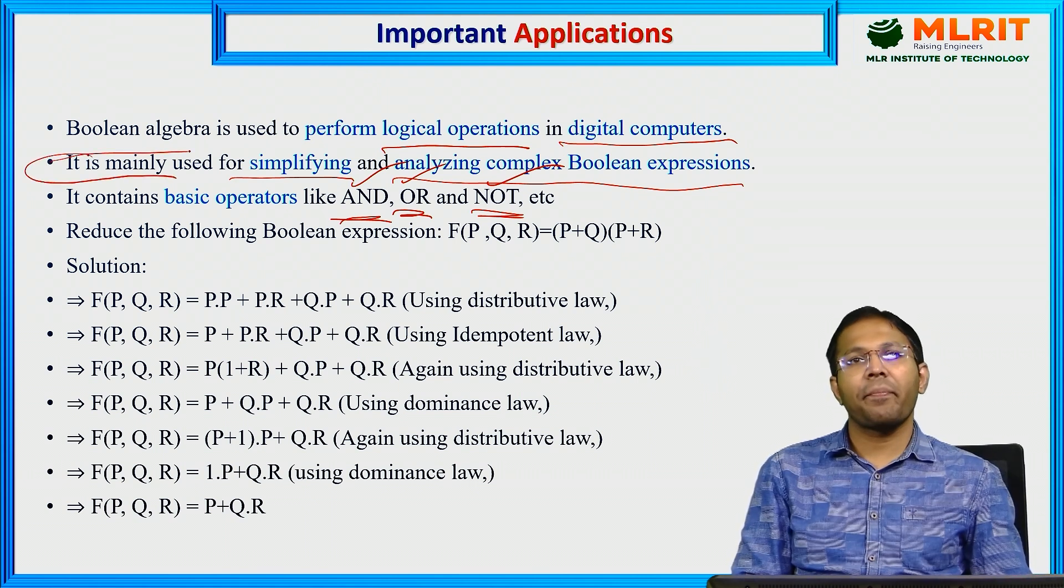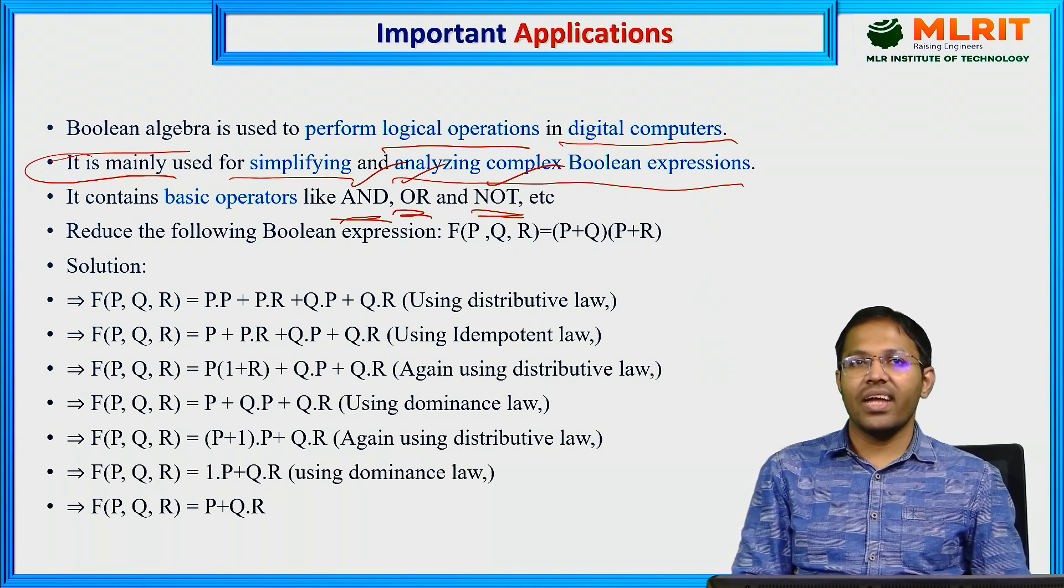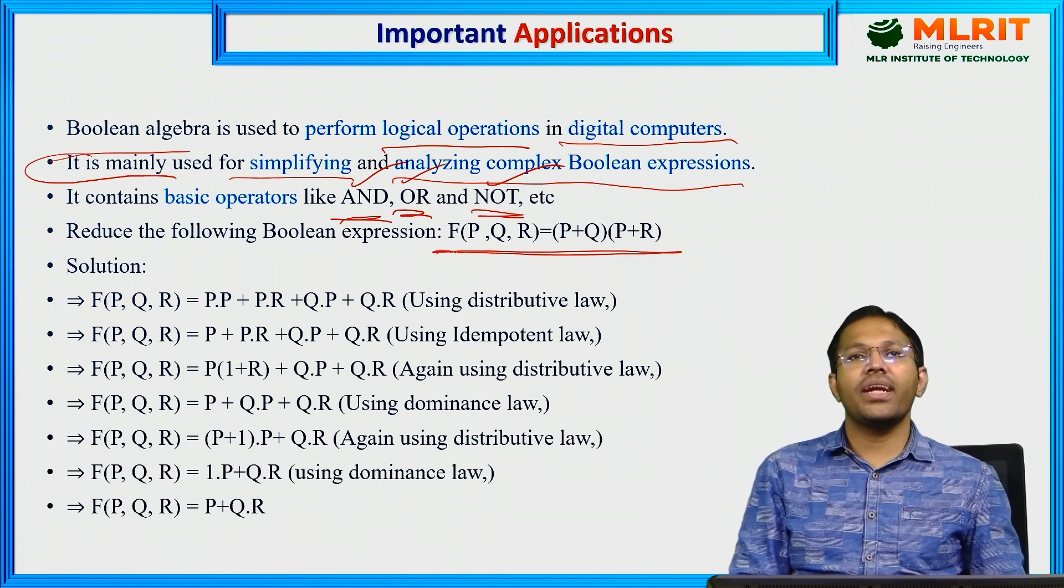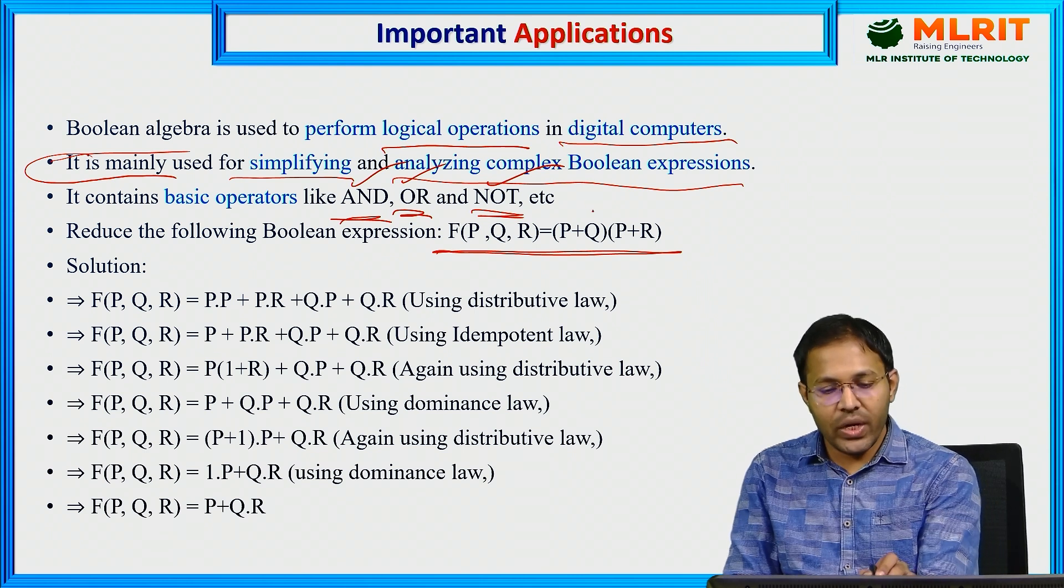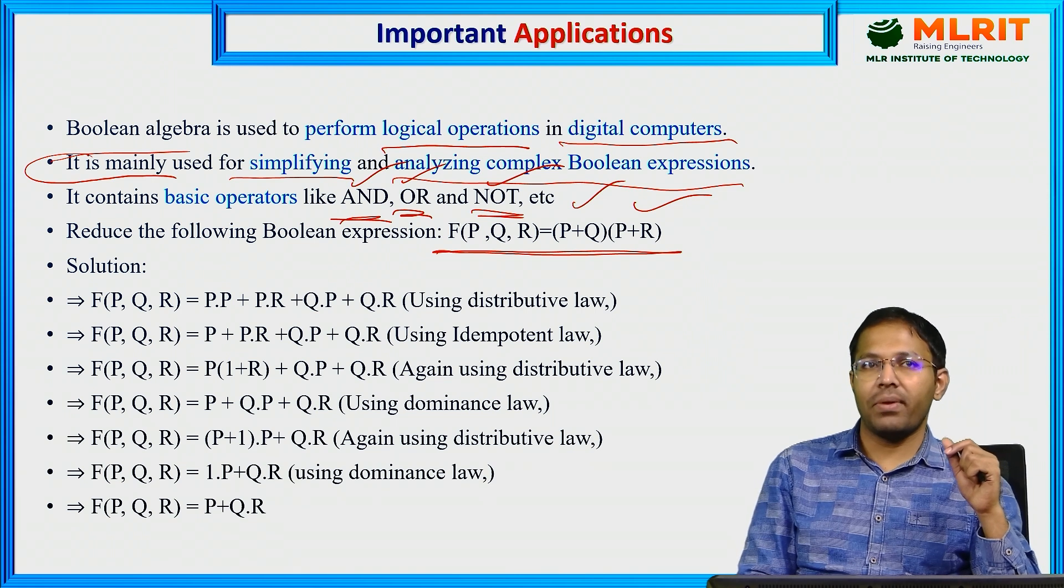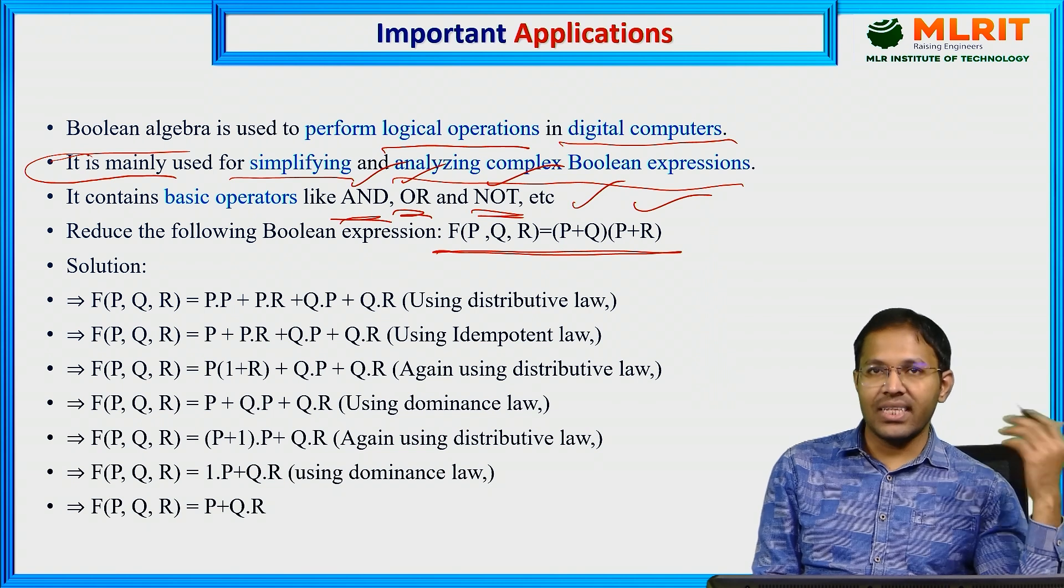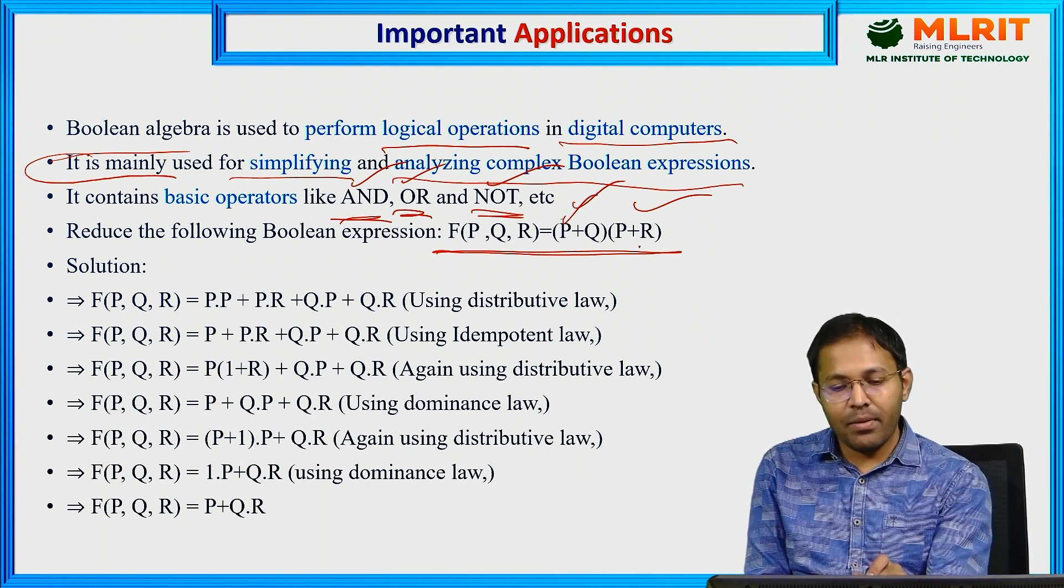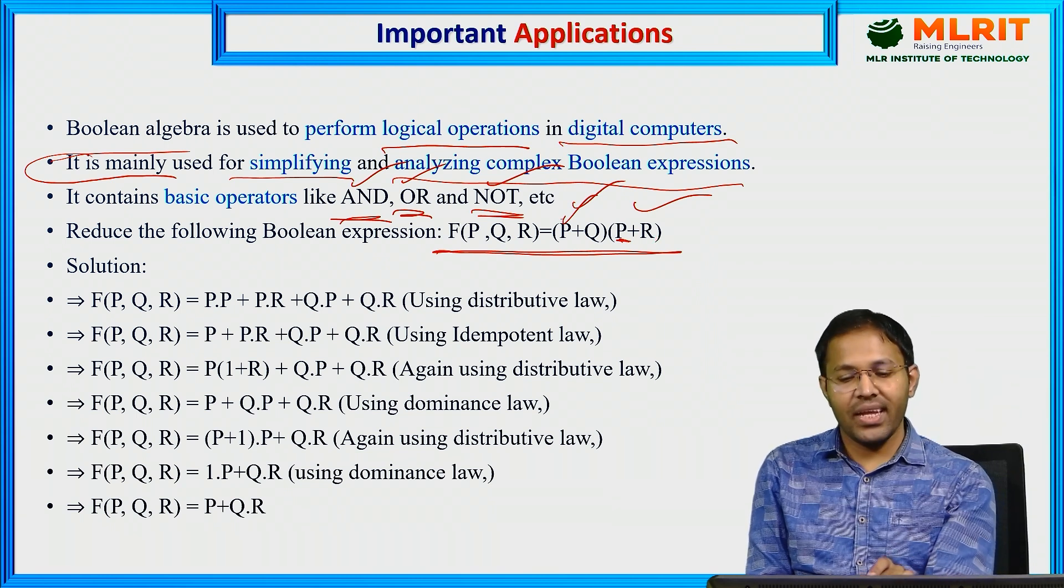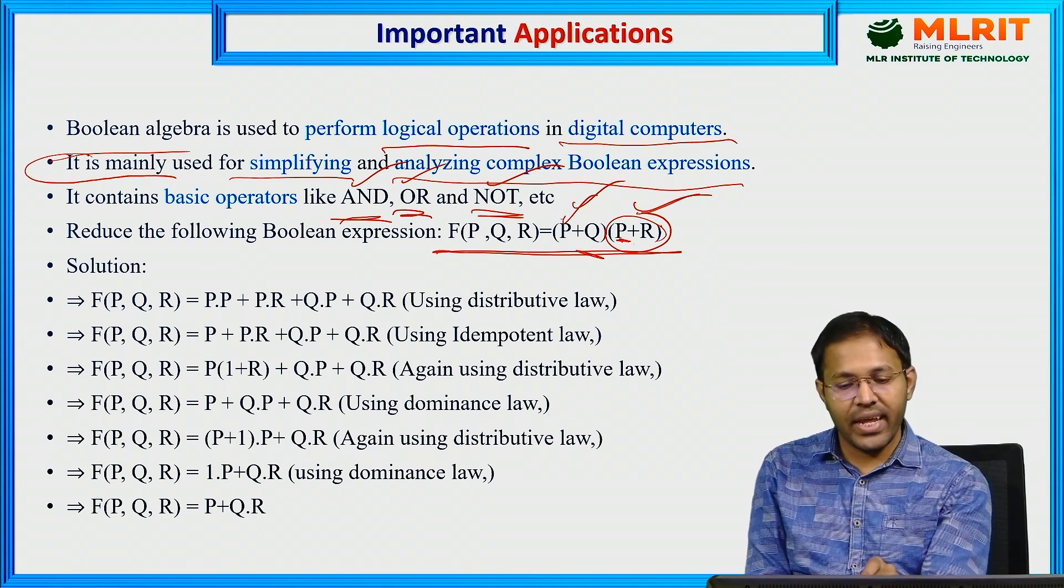Let us see that with the help of an example. Suppose this is the question: P plus Q into P plus R. This is a single expression, P plus Q into P plus R. Let us simplify that. First, similar to regular algebra, what we can do? The P we can multiply with P plus Q, plus the Q we can multiply with this term. First we will multiply P with this term, then next we will multiply Q with this term.